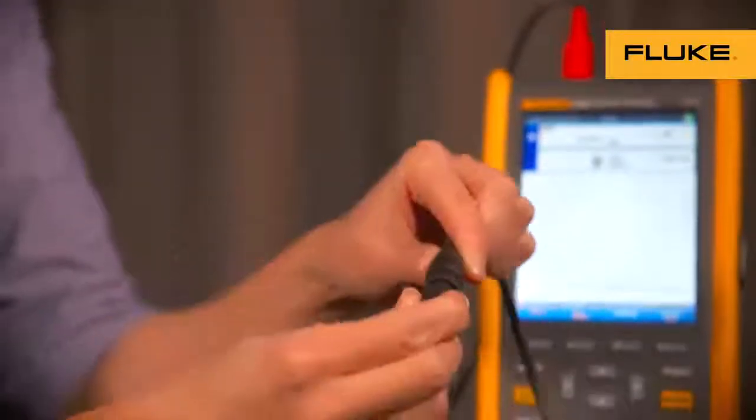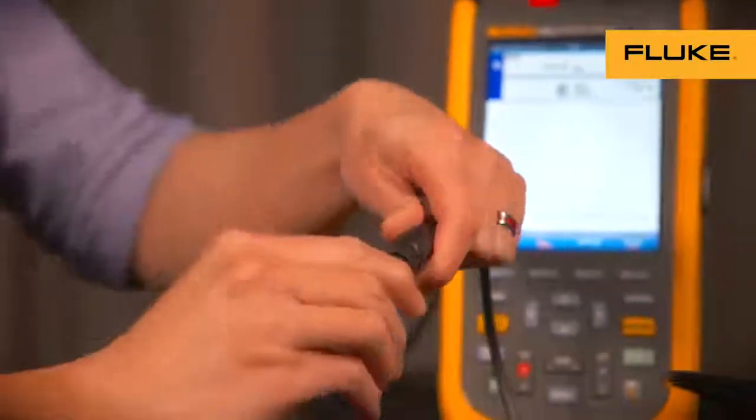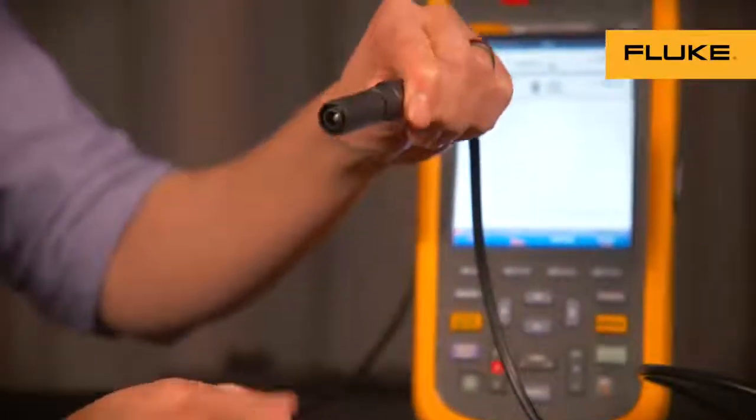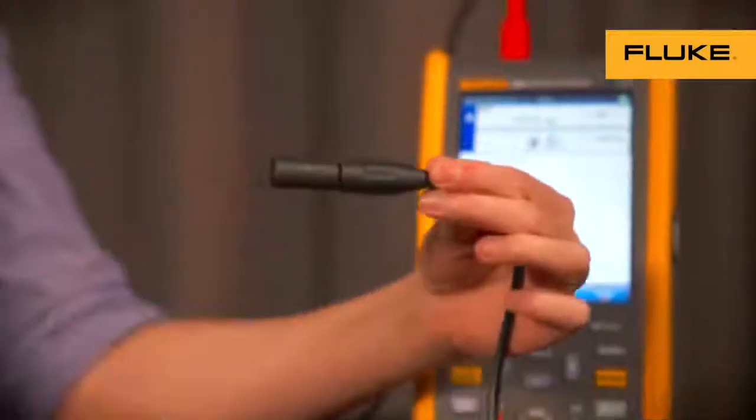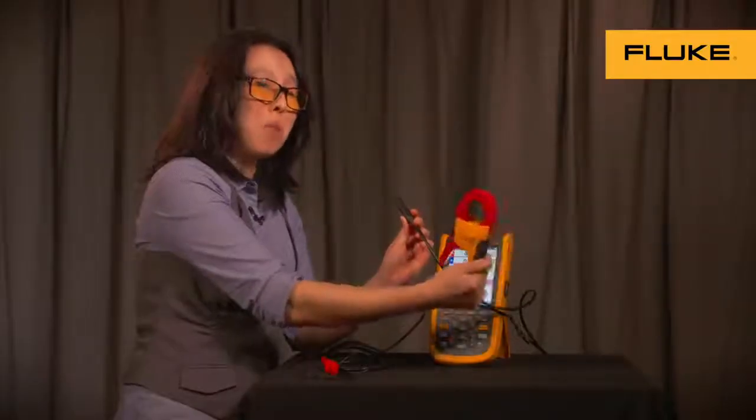It hooks on, like so. It's keyed, and then you twist it, and then it's on. The current clamp itself comes standard with the 125B kit.